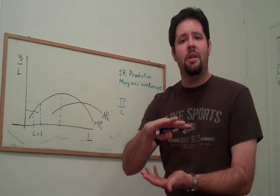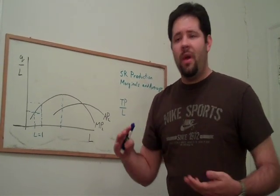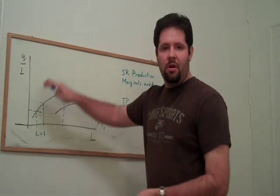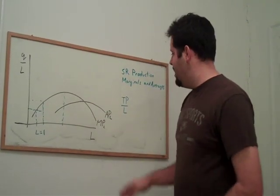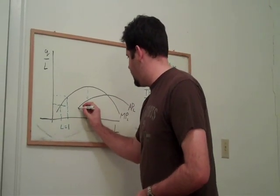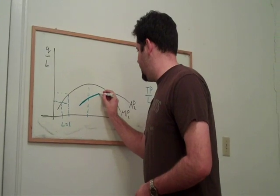So what must happen to the average? The way we can think about averages, average product, how it relates to marginal product, is when marginal product is above average product, average product has to be increasing.